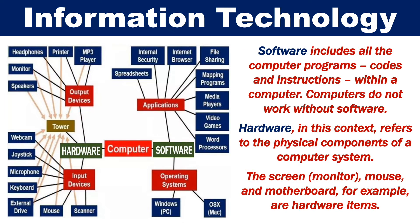Software includes all the computer programs within a computer. Computers cannot work without software. Hardware, in this context, refers to the physical components of a computer system. The screen, mouse, and motherboard, for example, are hardware items.